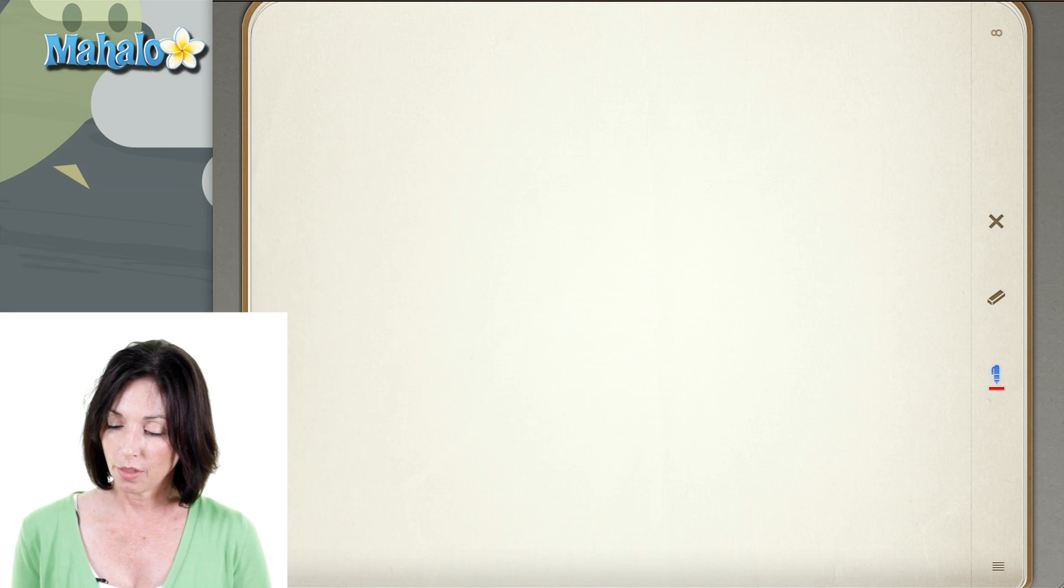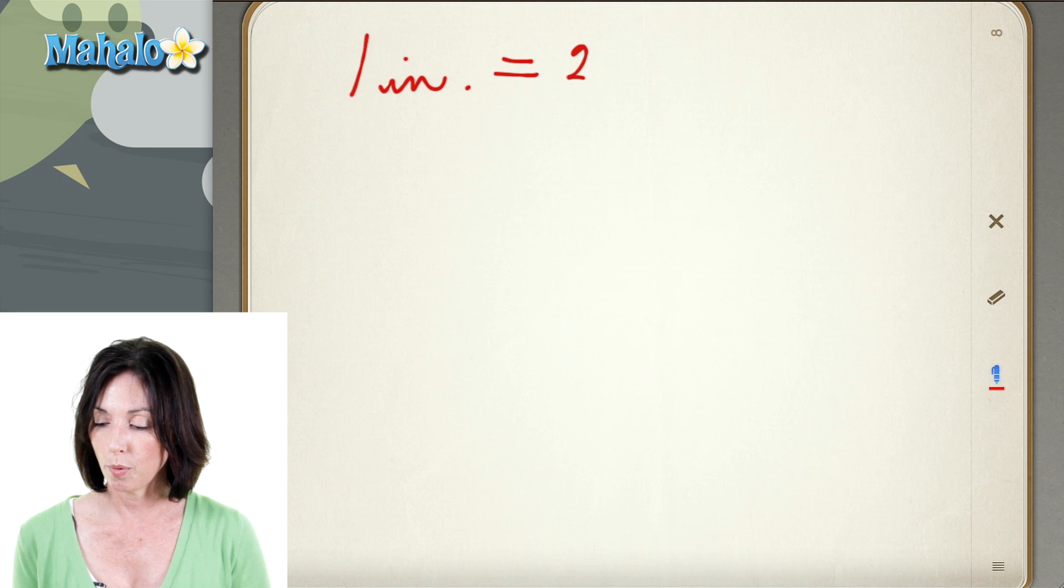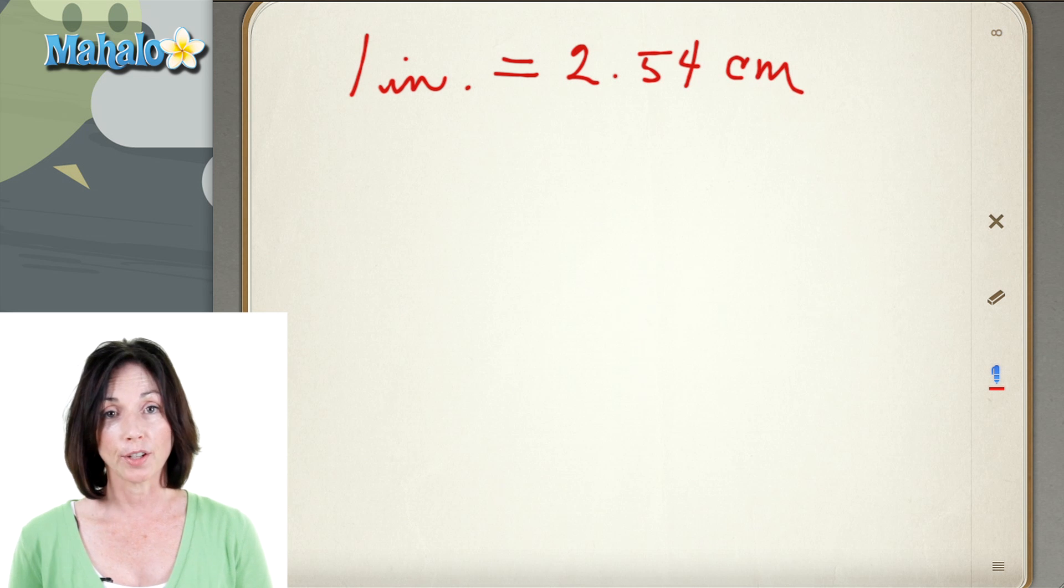So what's important to know about this is the conversion factor. How many inches there are in how many centimeters. So there is one inch for every 2.54 centimeters. That's our conversion factor.